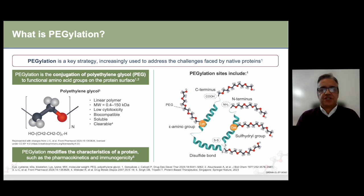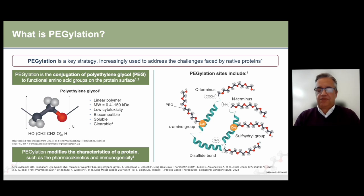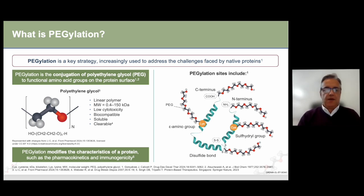Pegylation is a key strategy to address these challenges. Pegylation modifies proteins by attaching PEG molecules, enhancing properties such as pharmacokinetics and reducing immunogenicity. In many ways, pegylation modifies the characteristics of the protein, and can be conjugated using different strategies to different parts of the protein — such as the N-terminus, C-terminus, or inside the protein via disulfide bonds. This represents a significant leap in biotechnology.